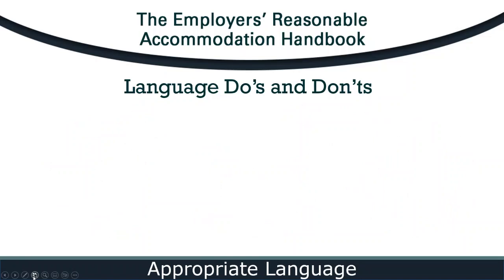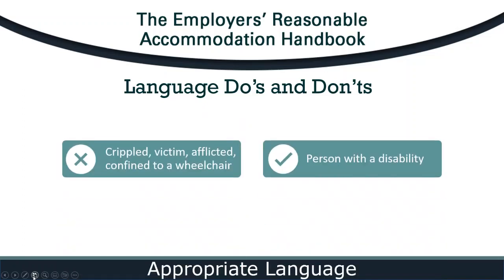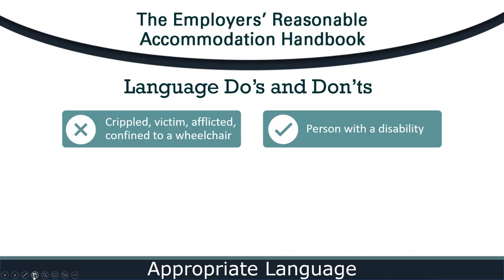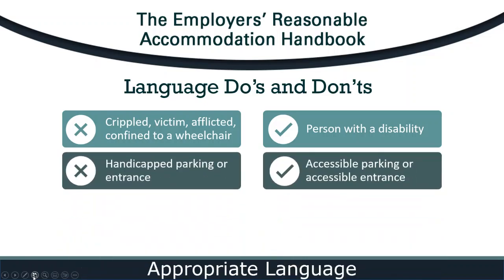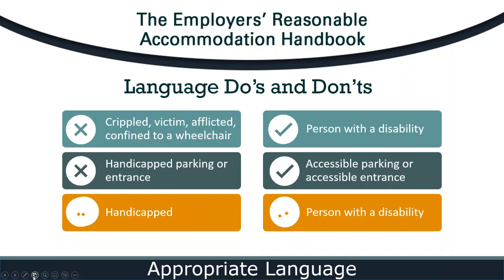Another way to be courteous is to use language that is preferred by people with disabilities. Let's review some terms that are not considered appropriate and then their more inclusive alternatives. We know language evolves — terms that may have been acceptable in the past can become negative or offensive. For example, words like crippled, victim, afflicted, and confined to a wheelchair are hurtful, so it's best to avoid using these words. And instead of referring to environmental features as handicapped, like when referencing parking and entrances, use the terms accessible parking or accessible entrance. Also, avoid referring to people with disabilities as handicapped.